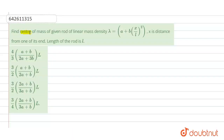Hello everyone. The question says: find the center of mass of a given rod of linear mass density lambda, which equals a plus bx upon l squared, where x is the distance from one of its ends and l is the length of the rod.